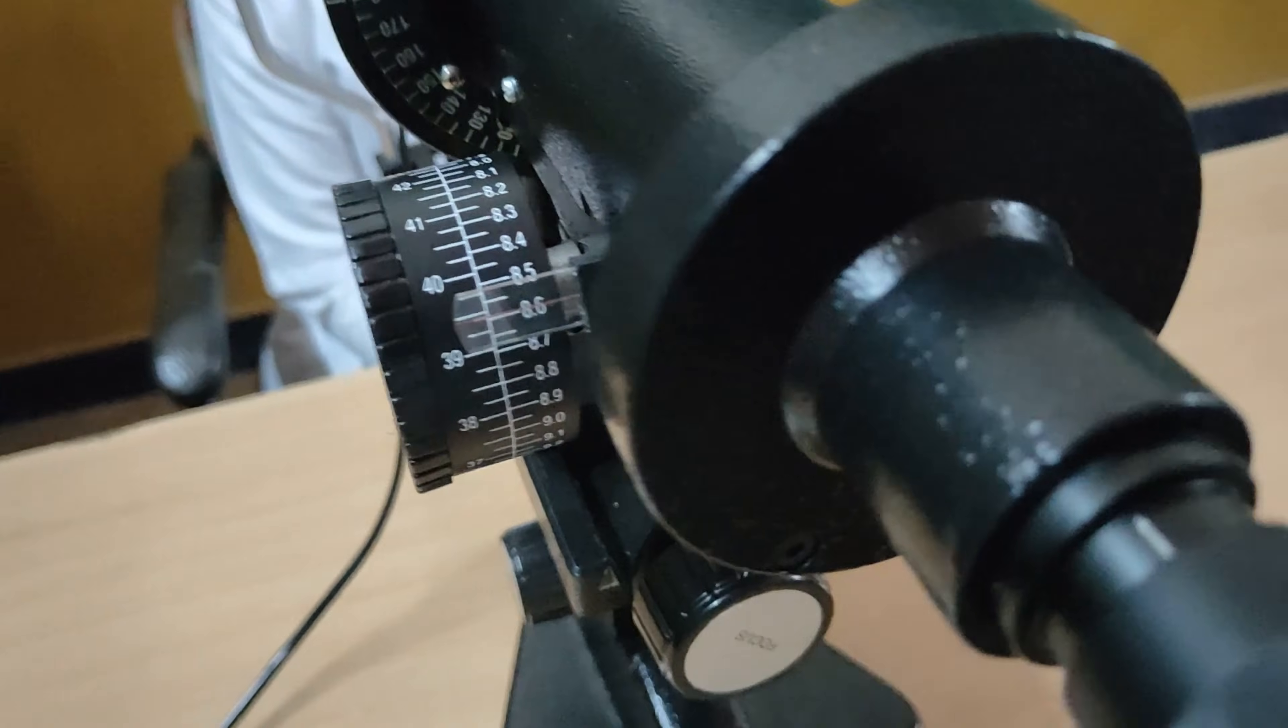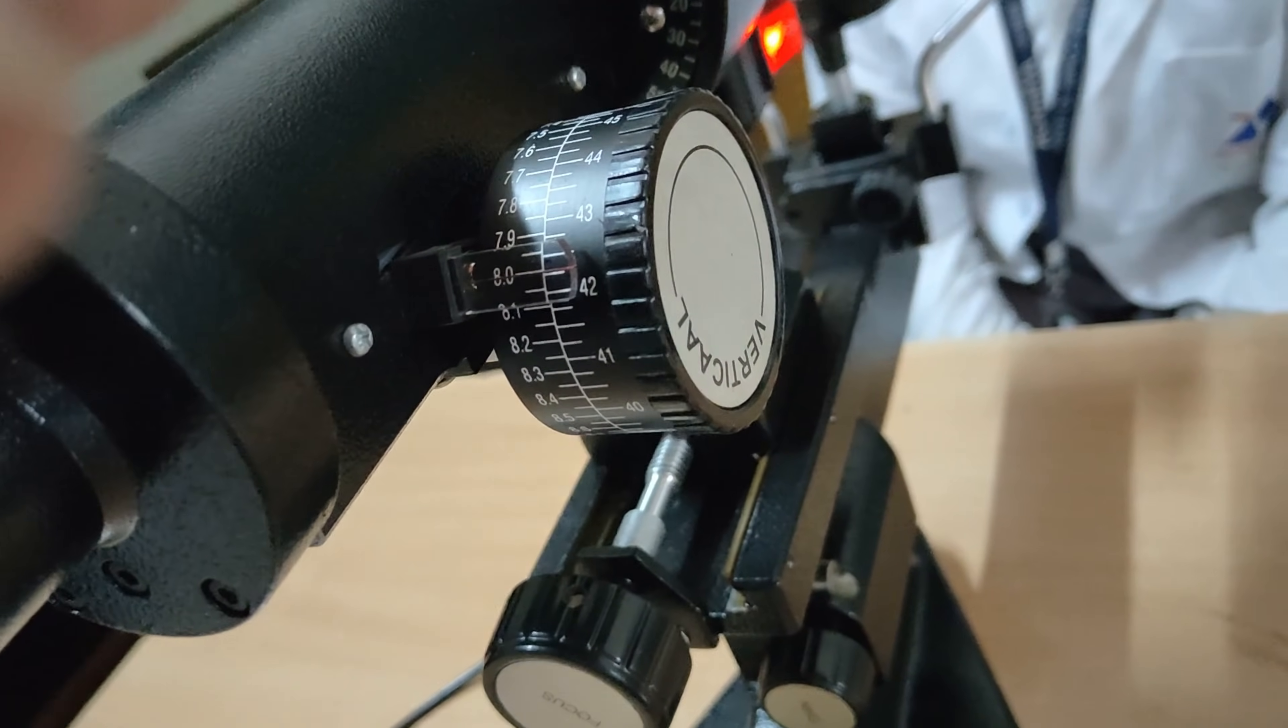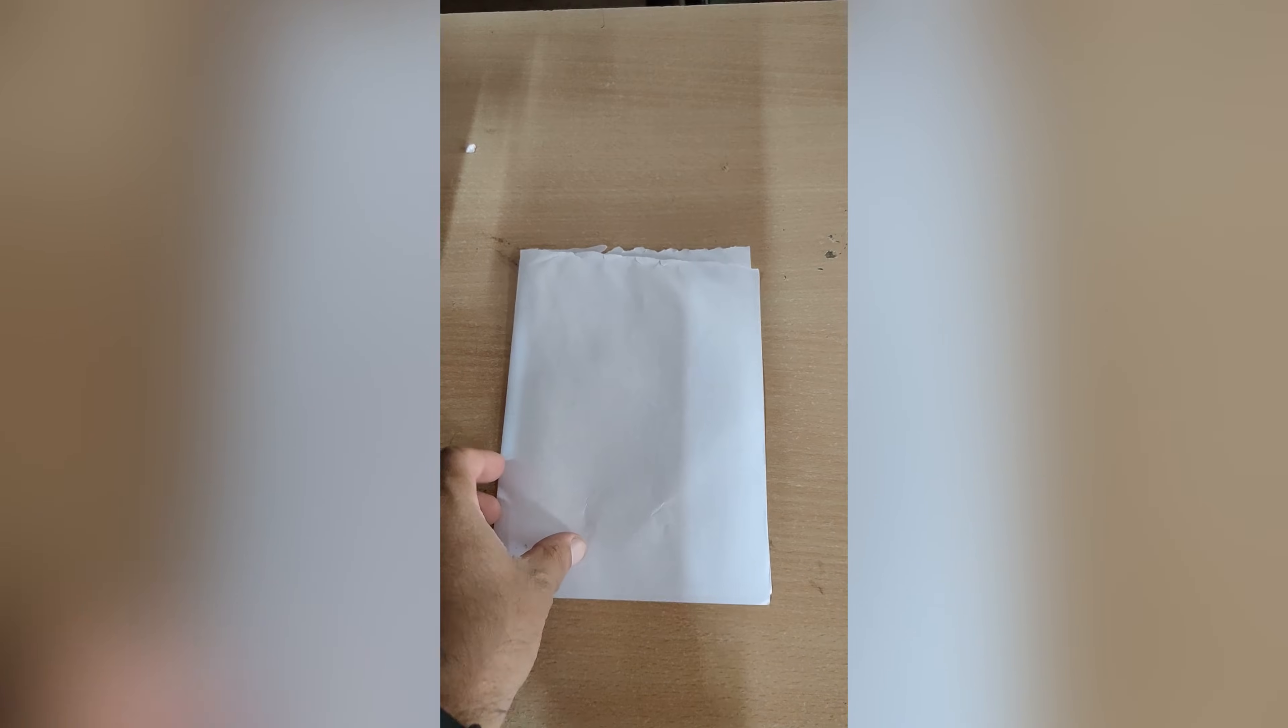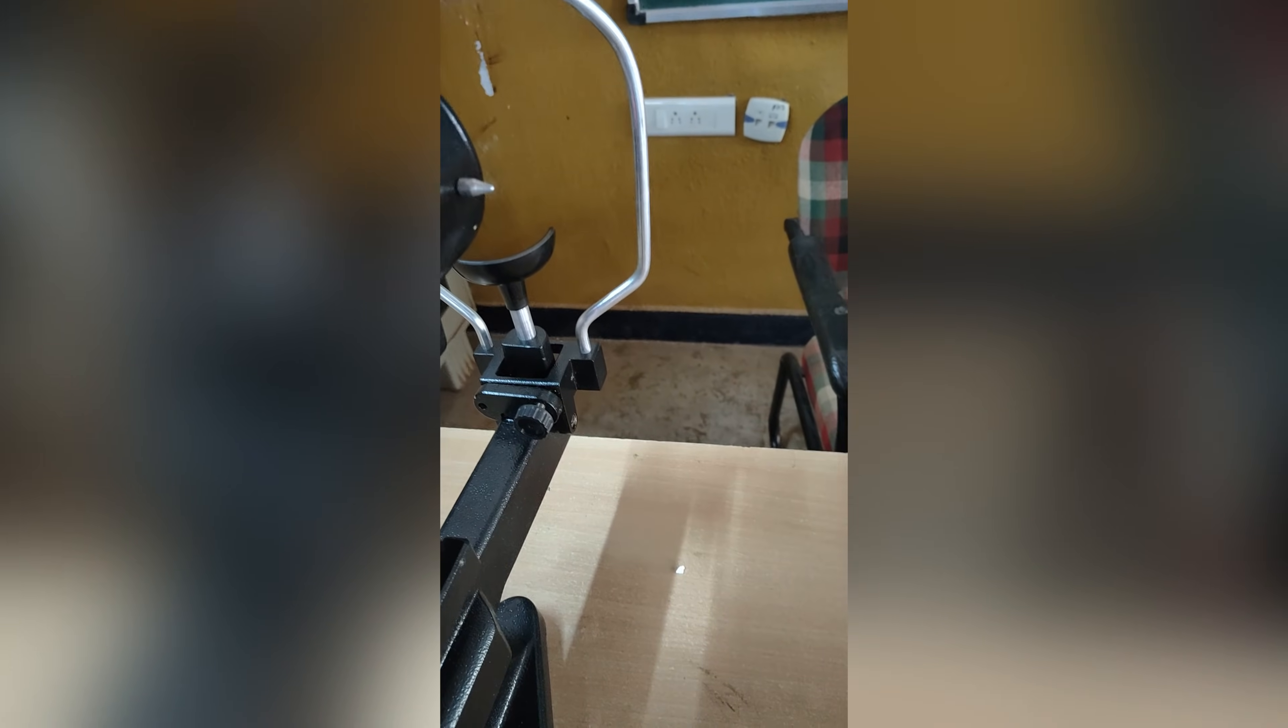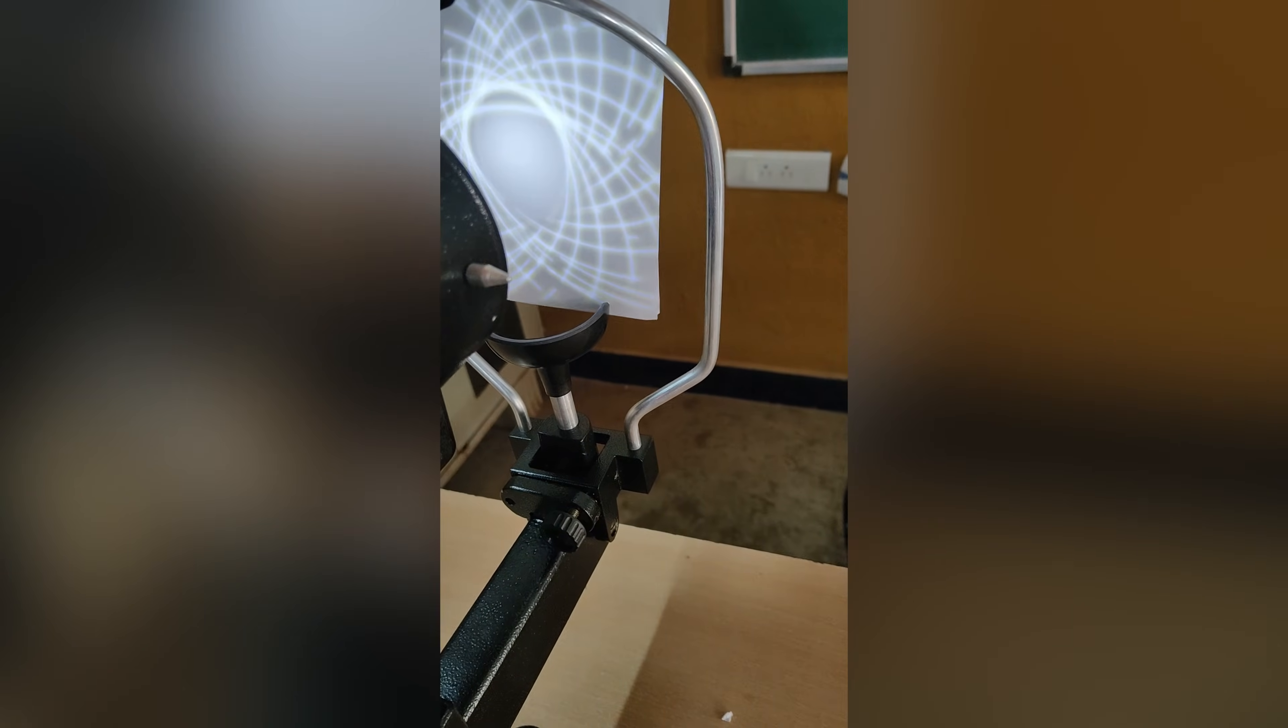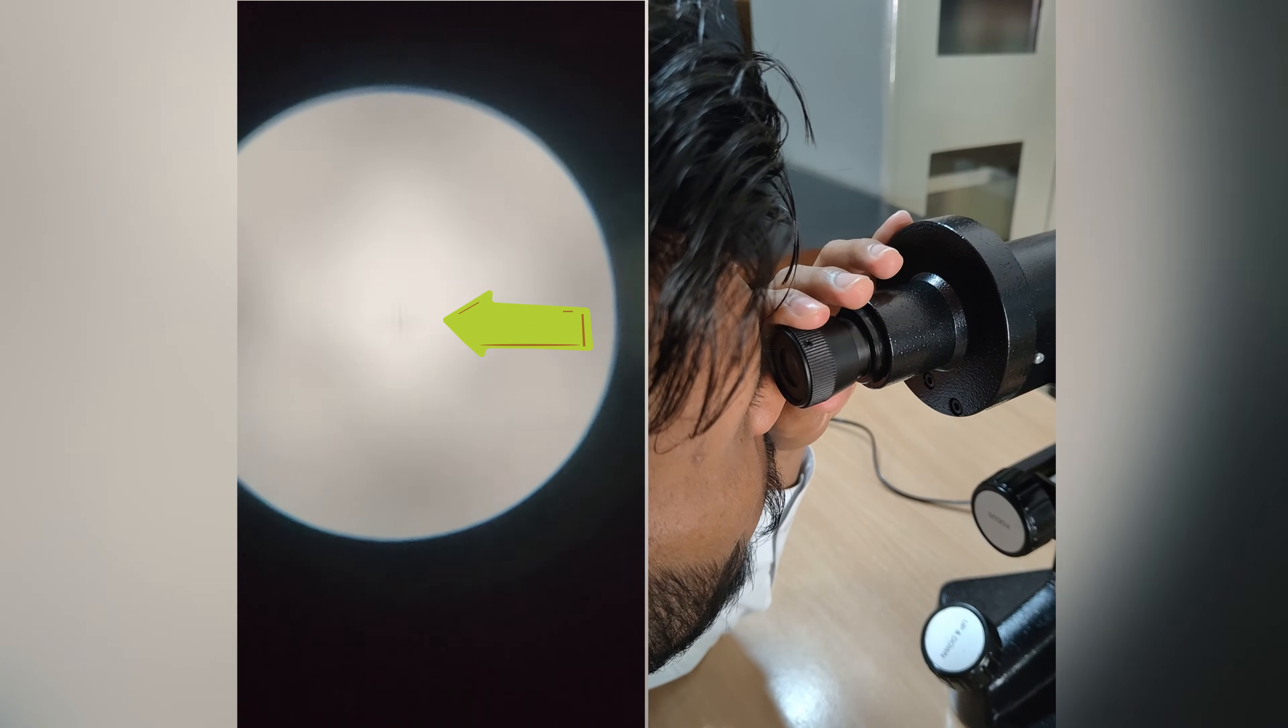Procedure of keratometry. First step is calibration. Keratometer has to be calibrated before use to ensure the accuracy of the measurement. To ensure calibration, focus the eyepiece. Place a white paper sheet in front of keratometer and focus eyepiece until the plus sign becomes clear.